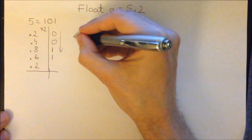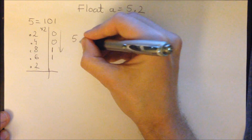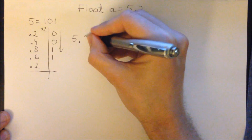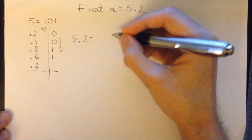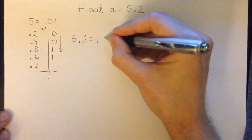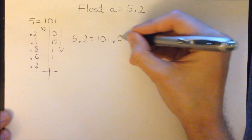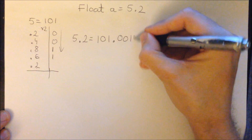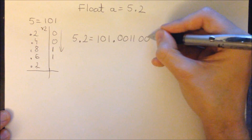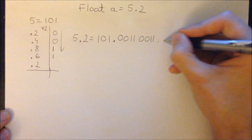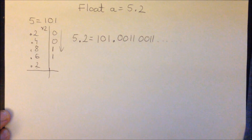So we know that 5.2 can be represented in binary as 101.001100110011... and it goes on forever.